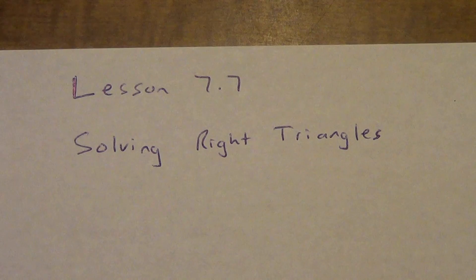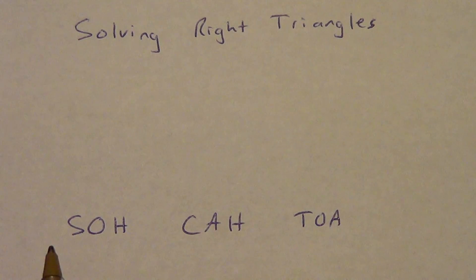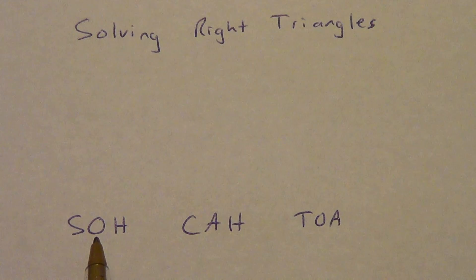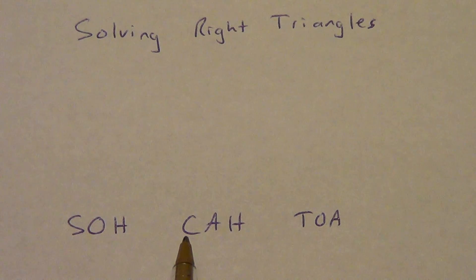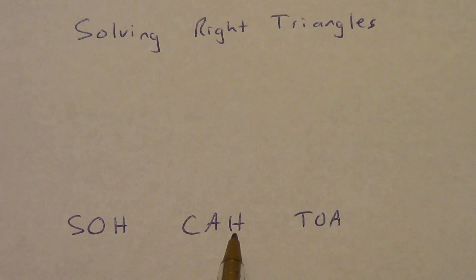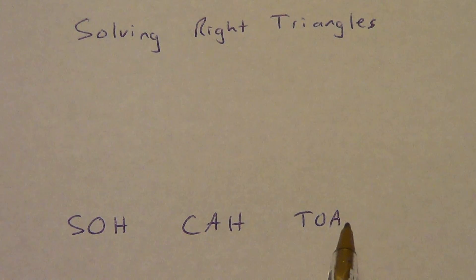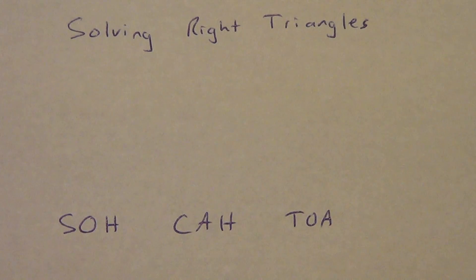We're still going to be using trigonometry to do this. Keeping in mind our SOH CAH TOA concept: sine of an angle equals opposite over hypotenuse; cosine of an angle equals adjacent — adjacent is always a leg — over the hypotenuse; and tangent of an angle equals the opposite side over the adjacent side. The adjacent side is always a leg.